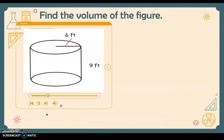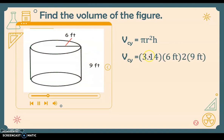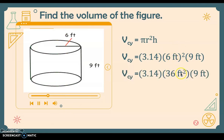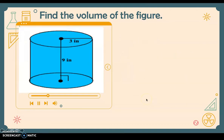Let's apply the formula. First example: find the volume of a cylinder. The formula is pi r squared times h. We substitute: pi = 3.14, radius = 6 feet (squared gives 36 square feet), and height = 9 feet. Multiplying: 3.14 times 36 times 9 gives a volume of 1017.36 cubic feet.